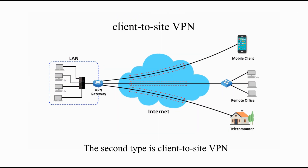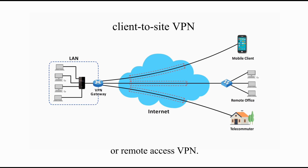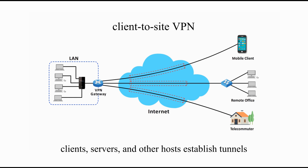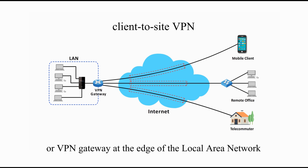The second type of VPN is Client-to-Site VPN, also called Host-to-Site VPN or Remote Access VPN. In a Client-to-Site VPN, clients, servers, and other hosts establish tunnels with a private network using a remote access server or VPN gateway at the edge of the local area network.